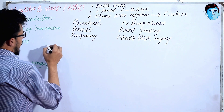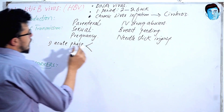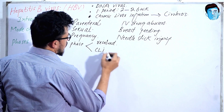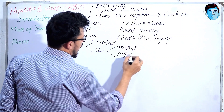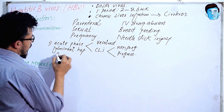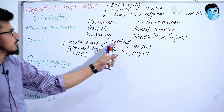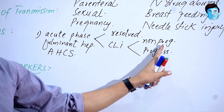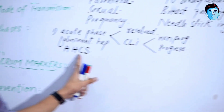Now how many phases does Hepatitis B virus have? The first phase is the acute phase. This acute phase may either get resolved, or it may lead to chronic liver infection. This chronic liver infection may lead to a non-progressive phase or a progressive phase. There is also fulminant hepatitis and an asymptomatic healthy carrier state.